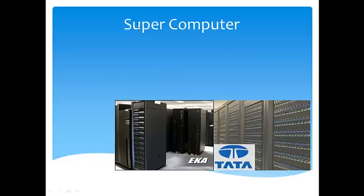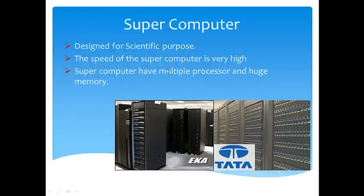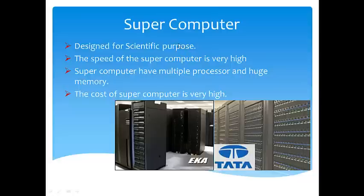Next comes the super computer. The name itself says super — this computer is very, very fast in speed, and its storage is very huge. Supercomputers are mainly used for research and scientific purposes. The speed of supercomputers is very, very high. Supercomputers have multiple processors and huge memory — it is not a single cabinet but multiple cabinets or multiple system units working with multiple processors. The supercomputer can store huge volumes of data. The cost of a supercomputer is very, very high because it is used only for scientific purposes.